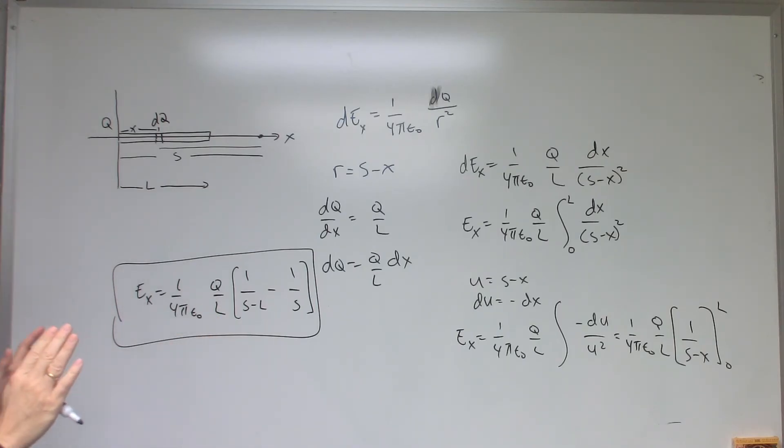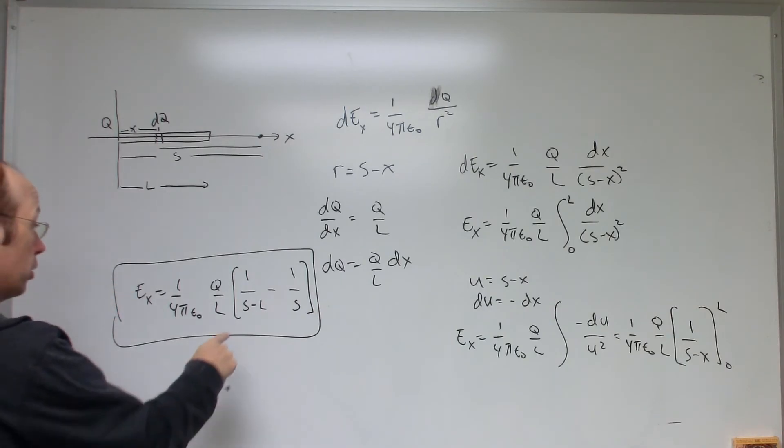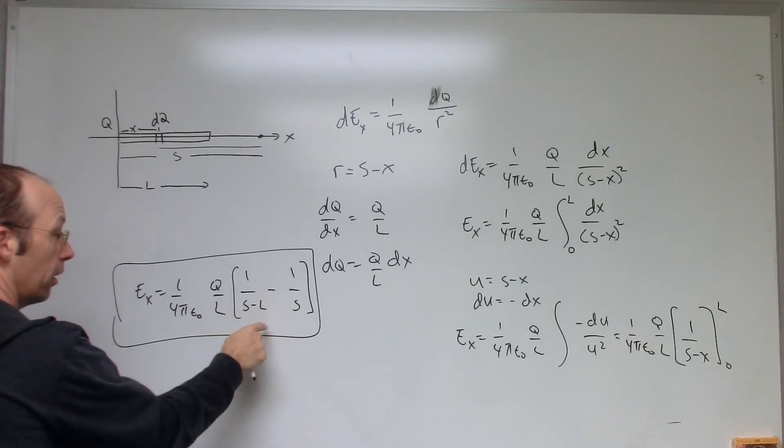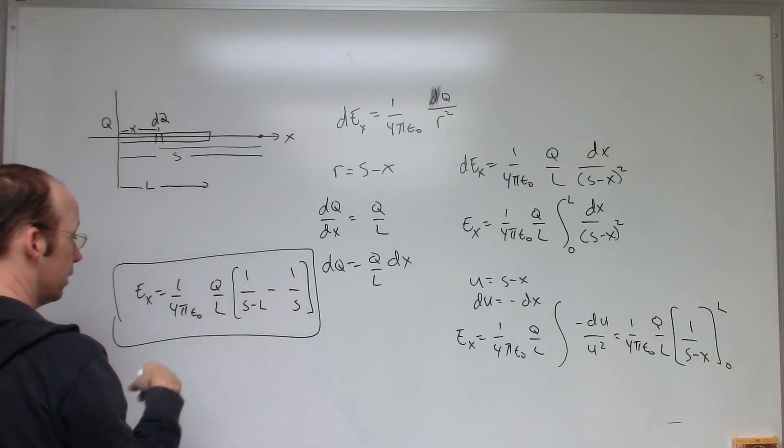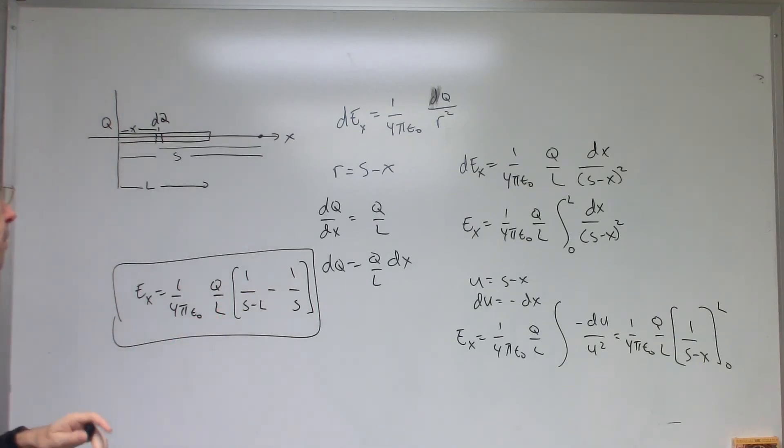Now, what about the case where I get really far away? As S goes to infinity, the electric field should go to 0. So that looks like that would happen right here. And you could simplify this some. But as S increases, this goes to 0 and so does that. So that's good. You could also do the limit as L goes to 0. It should look like a point charge. But that's not so obvious here, so I'll leave that alone.